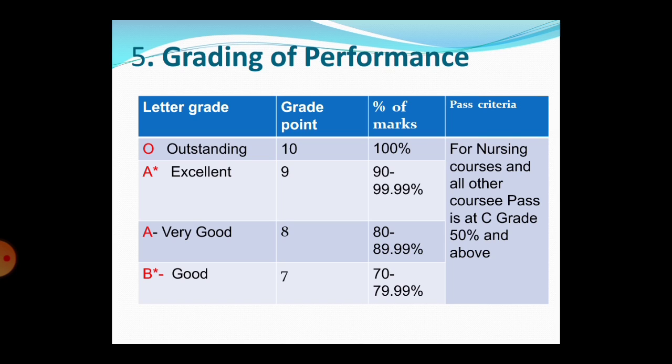If you have 90 to 99.99% you are excellent — that is A plus, with a grade point of 9. If you have 80 to 89.99% you are very good — A is awarded, with a grade point of 8. If you have 70 to 79.99%, the grade point is 7 and you are B plus, meaning good.